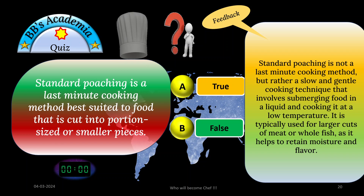Time is up. The option is false. Standard poaching is not a last-minute cooking method but rather a slow and gentle cooking technique that involves submerging food in a liquid and cooking it at a low temperature. It is typically used for larger cuts or joints of meat or whole fish, as it helps to retain moisture and flavor. Remember: poaching is a slow and gentle cooking process at a lower temperature level.